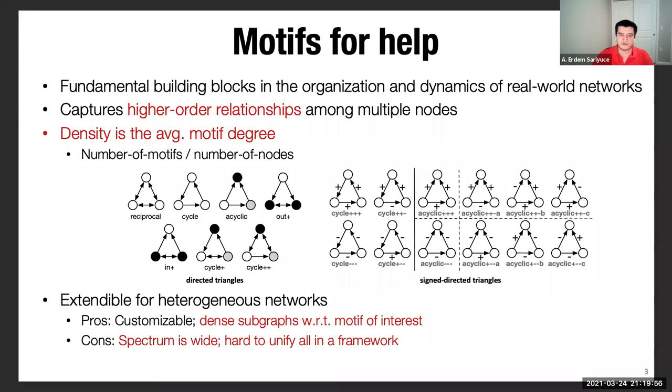If you go for the edge directions or edge labels, the spectrum of the motifs are getting pretty wide, which is kind of a disadvantage. And it's also hard to unify all of those things in a single theoretical framework. However, their customizable nature and also the possibility to find dense subgraphs with respect to a given motif is very promising. So we basically decided to use motifs to find dense subgraphs in heterogeneous networks.